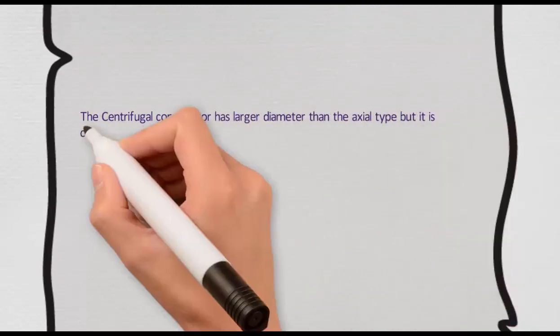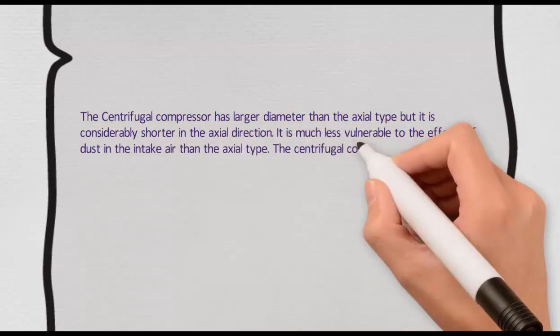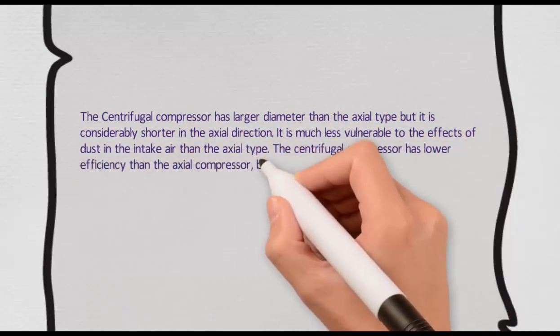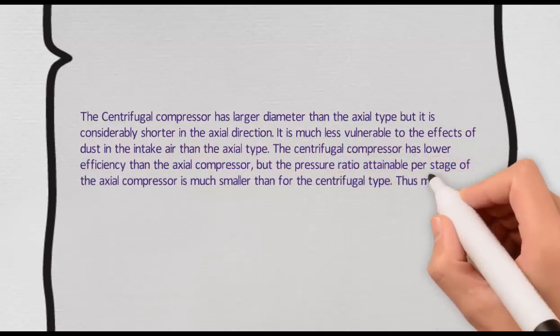The centrifugal compressor has larger diameter than the axial type, but it is considerably shorter in the axial direction. It is much less vulnerable to the effects of dust in the intake air than the axial type.